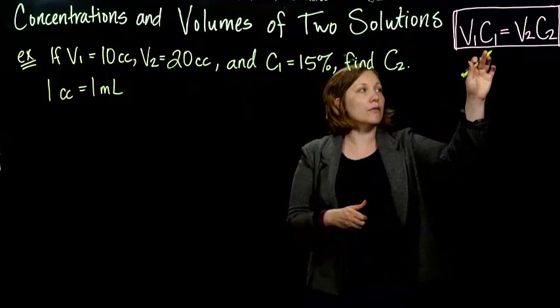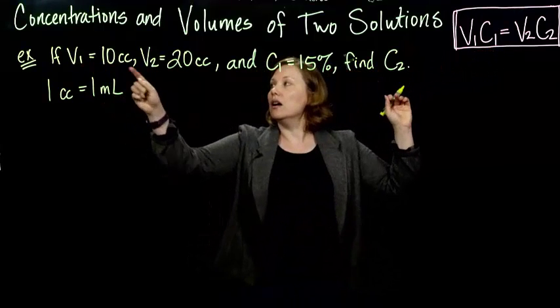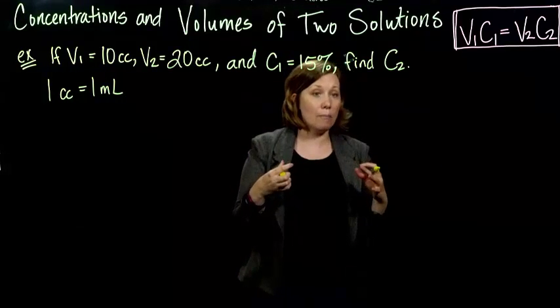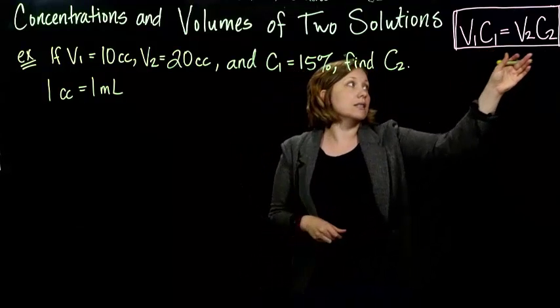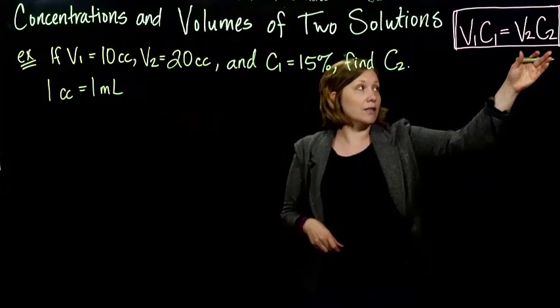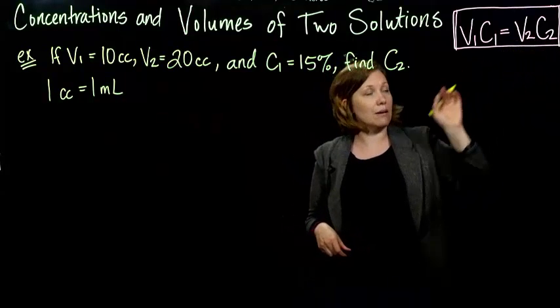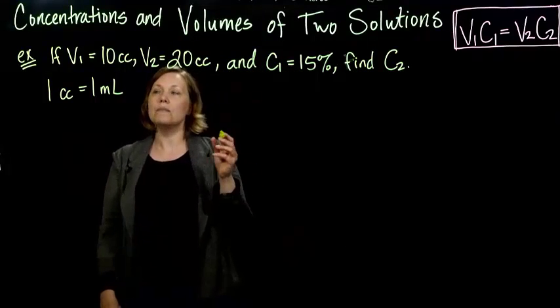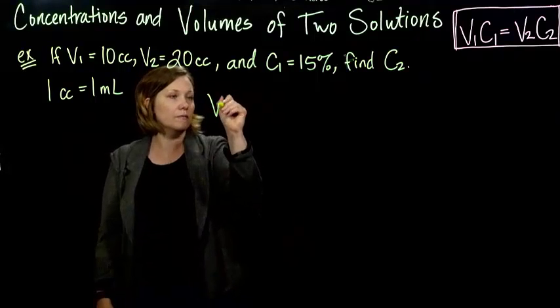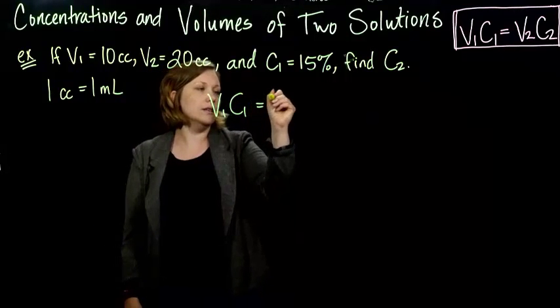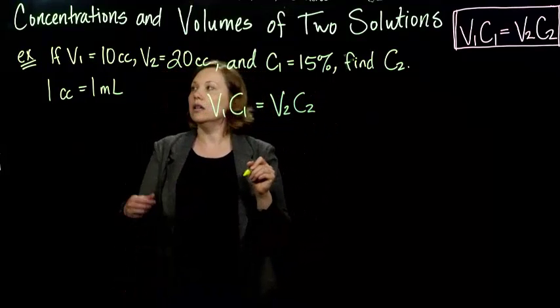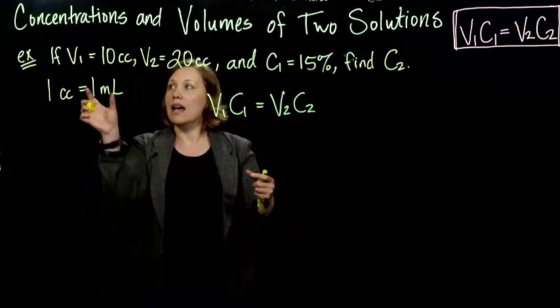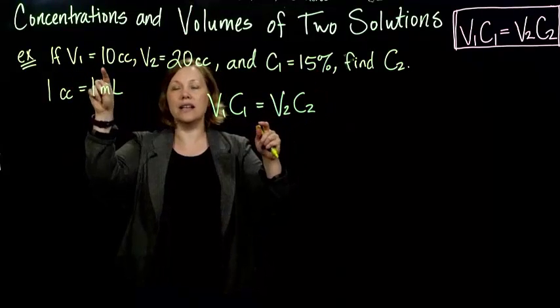So the volume of the first solution, our solution before we dilute it, times the concentrate, will give us the amount of the substance. And then that should be equal, we should have the same amount if we take the volume of the second substance and multiply it by the concentrate of the diluted substance. So V1C1 equals V2C2. You don't have to memorize the formula, as long as you understand what's going on, that you should have the same amount regardless. And to find the amount, we just multiply the percent times the volume.